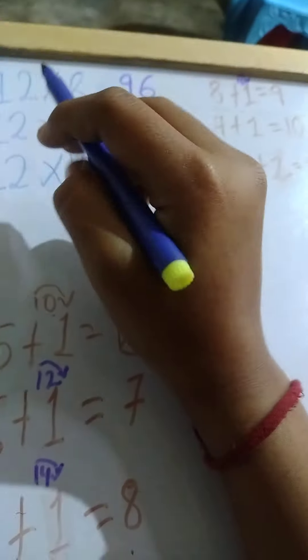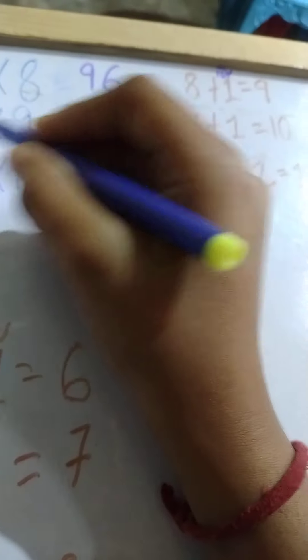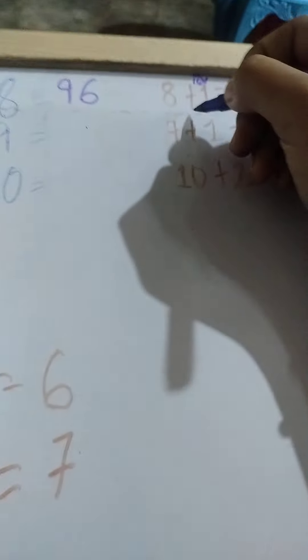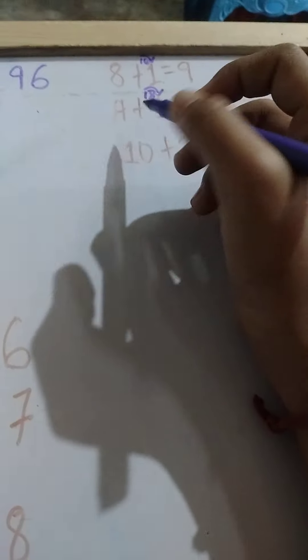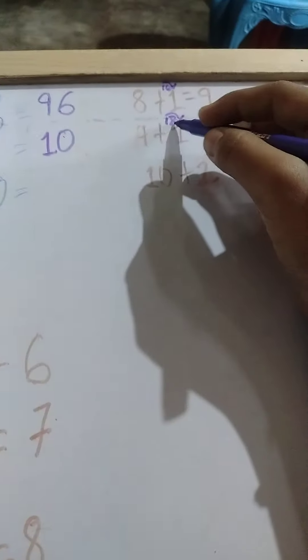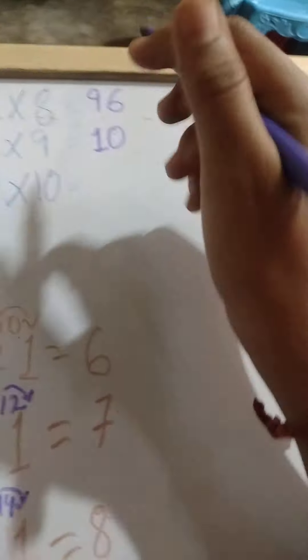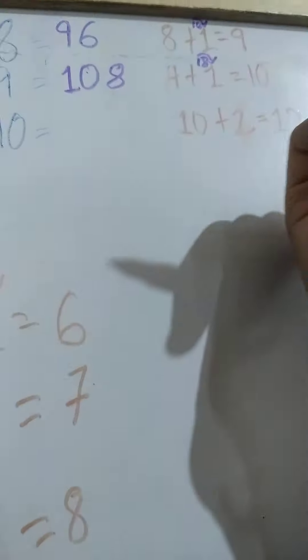For 9: 9 ones are 9. We put the 9 in our hand. Then 9 twos are 18. The 1 from 18 will be added to 9, giving the answer 10. We write the 10, and the 8 is in our hand, so we write the 8 here. For 10: 10 ones are 10.